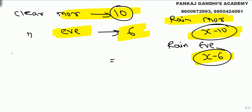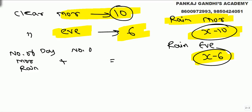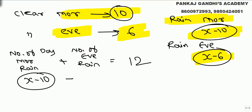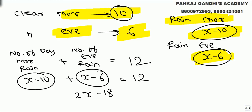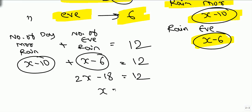Now, the number of days of morning rain plus the number of days of evening rain equals the total number of days it rained, which is 12. So: (x minus 10) plus (x minus 6) equals 12, giving us 2x minus 16 equals 12.